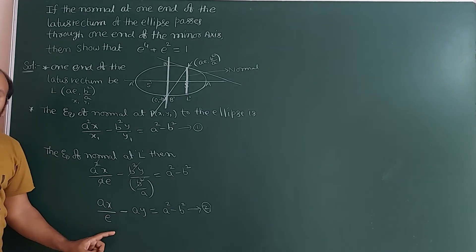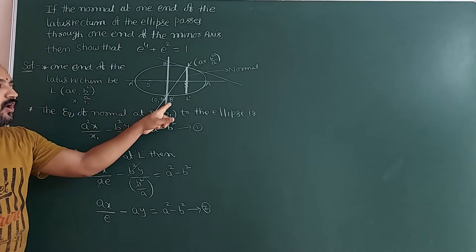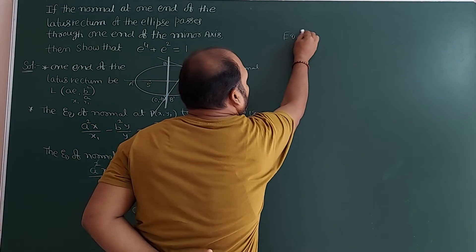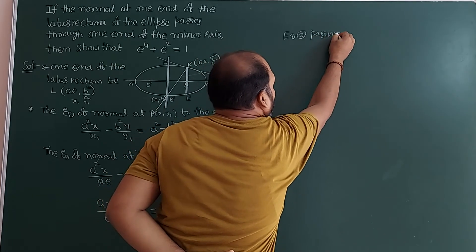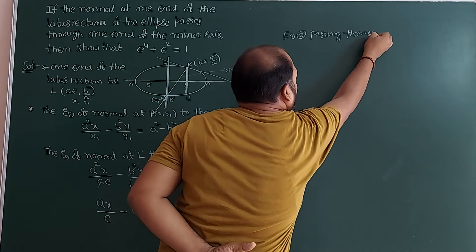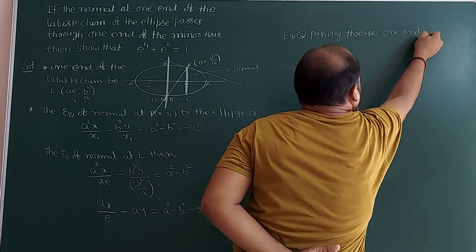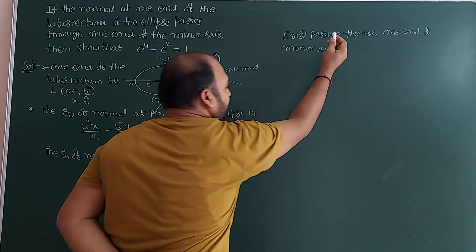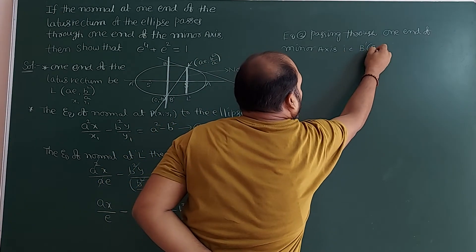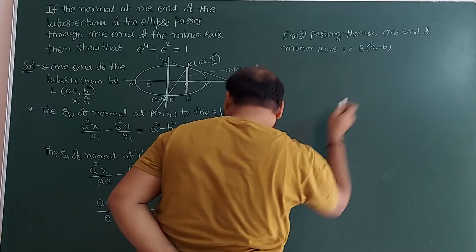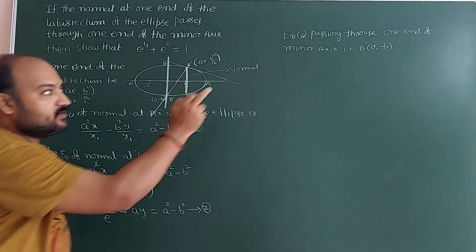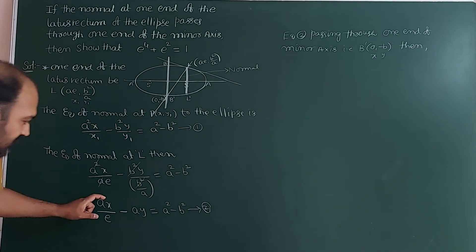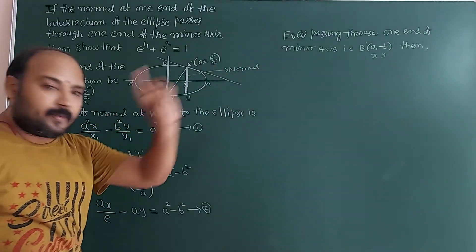This equation (2) passes through one end of the minor axis. What is one end of the minor axis? It is B', with coordinates (0, −b). So in place of x and y here, we replace with those values — this is x, this is y. Then substitute x = 0 and y = −b into the normal equation.